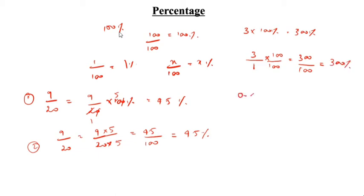0.46 — this is the decimal form into percentage. How we will convert decimal into percentage? 0.46 into 100 percentage you have to write. So, 1 stands for 100, and what is that? 46 percentage. You have to multiply 0.46 by 100, which gives 46 percentage.